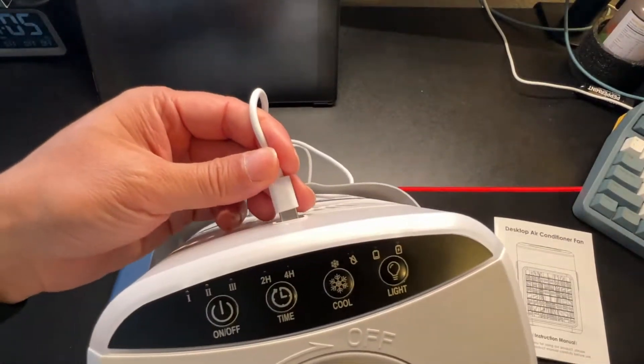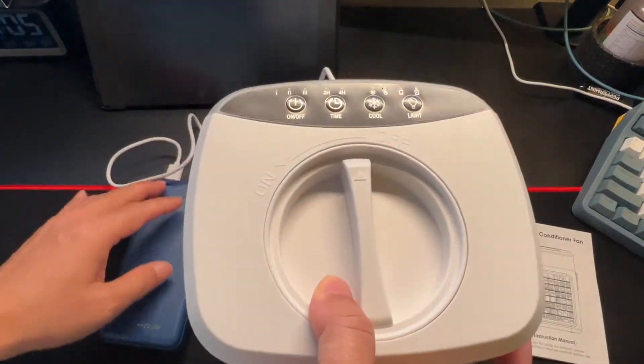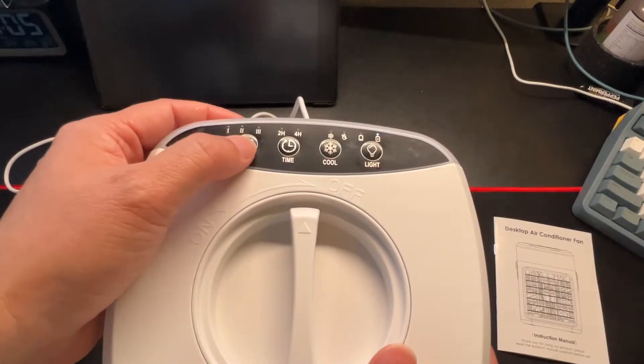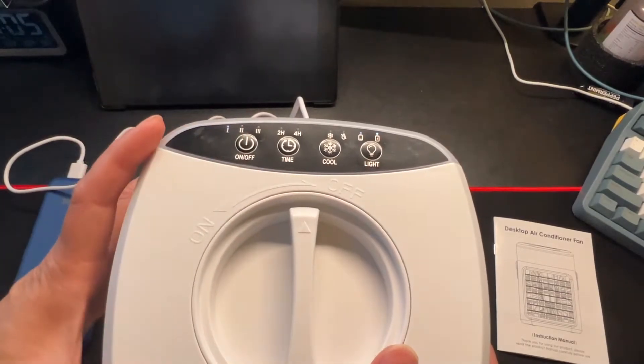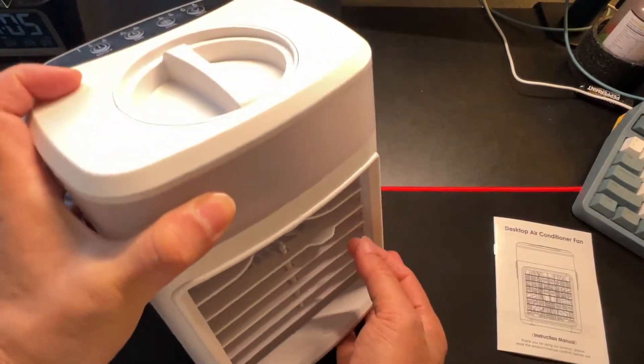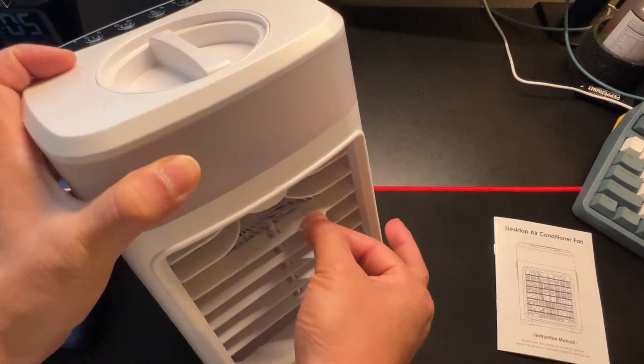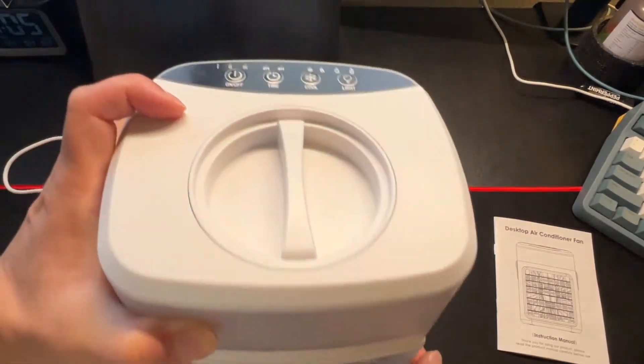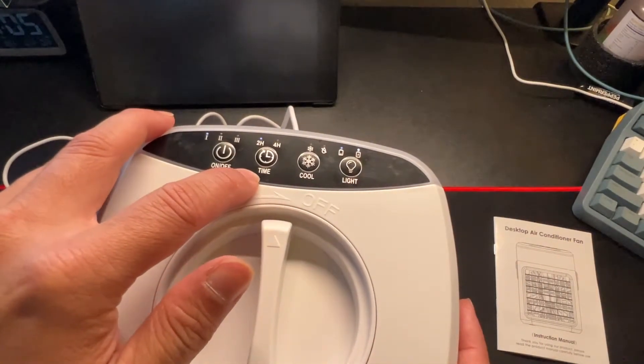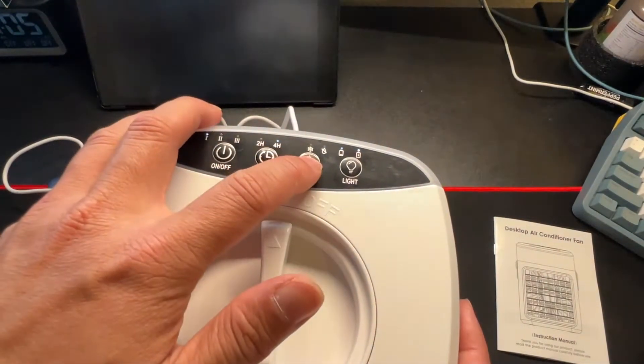Plug in the USB Type-C port in the back and you'll long press to turn it on. There you go. It has a little fin here so you can adjust the direction of the breeze. On top you also have a timer so it can turn off after two hours or four hours.